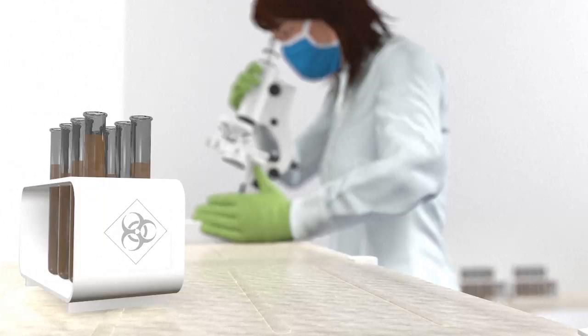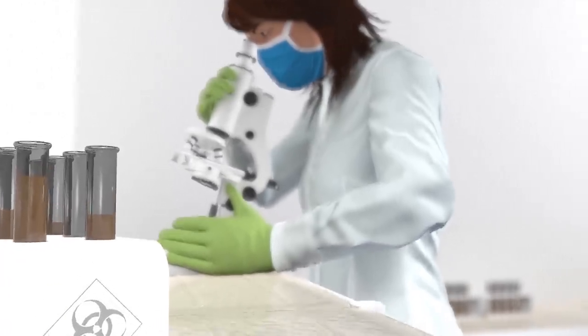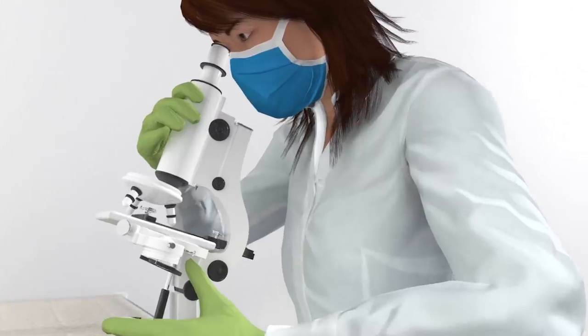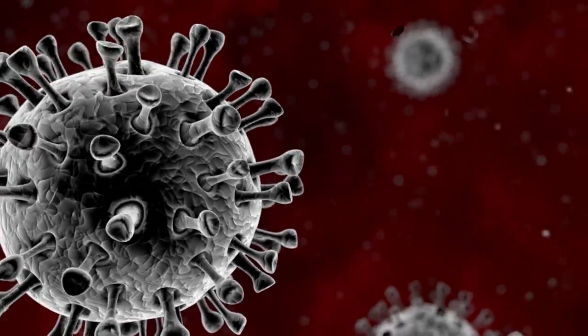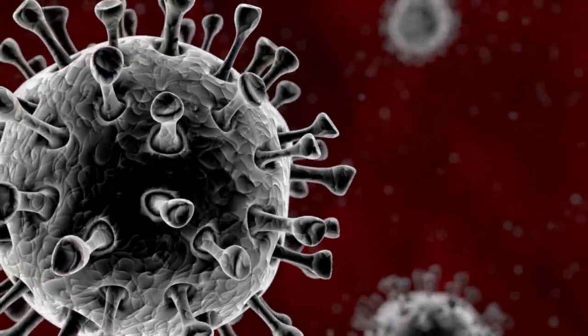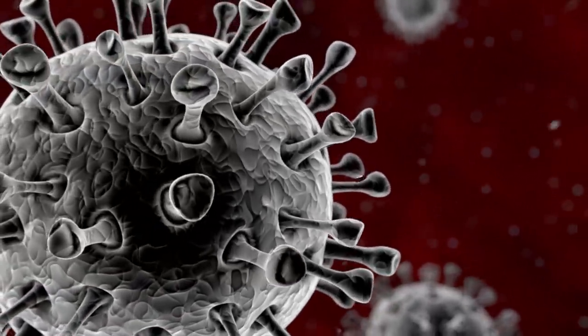The messenger RNA of the vaccine against SARS-CoV-2 is manufactured in a laboratory. It's introduced into the cell to make it manufacture the antigens specific to the coronavirus, the spike proteins that cover the surface and give it its crown-like appearance.